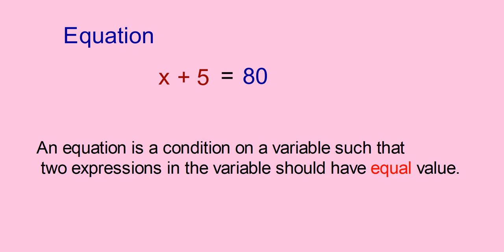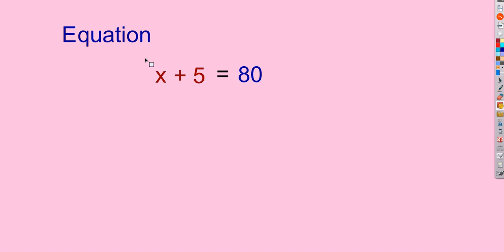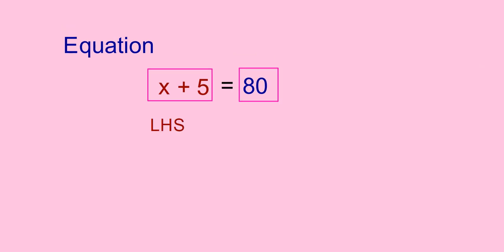That is, an equation is a condition on a variable such that two expressions in the variable should have equal value. Here you can find out two expressions. One is x plus 5. Another is 80. x plus 5 is in left hand side of the equal sign, so we can call it as LHS. And 80 is in the right hand side of the equal sign, so we can call it as RHS. That is, for an equation, both LHS and RHS must be equal.